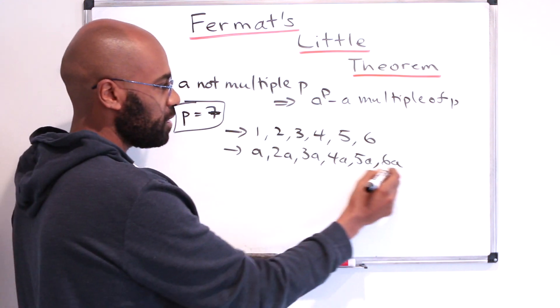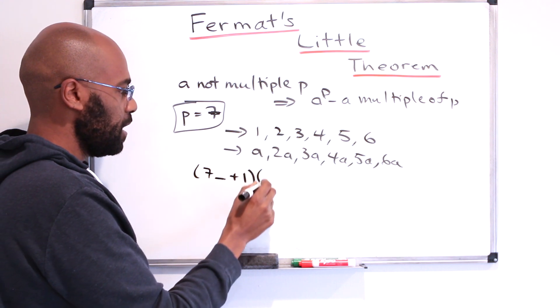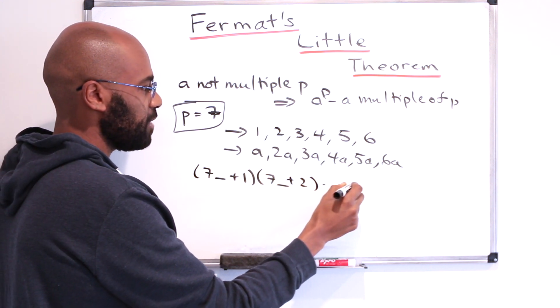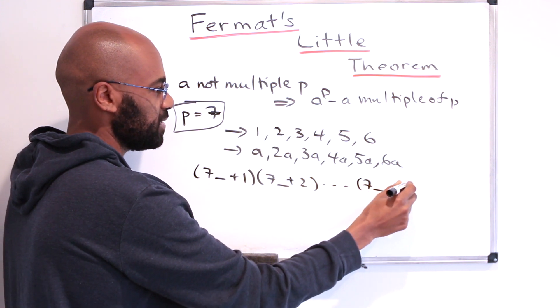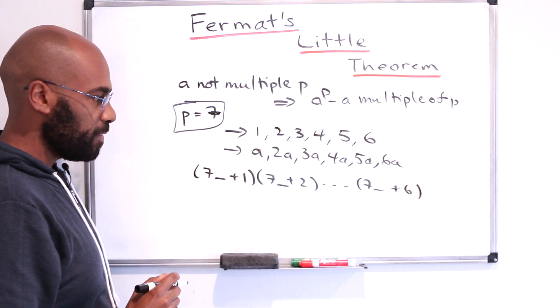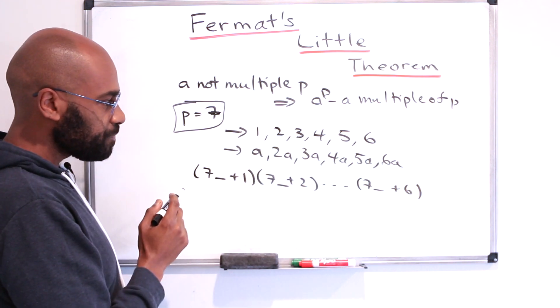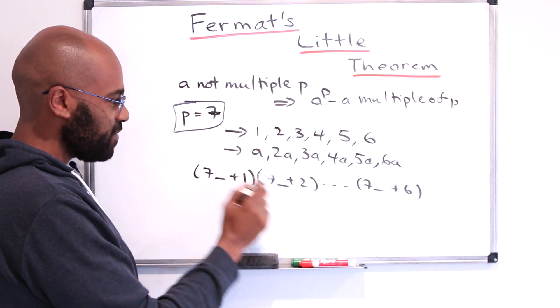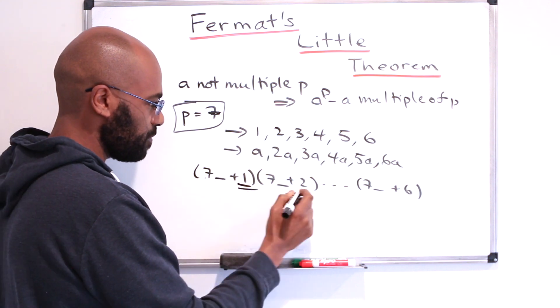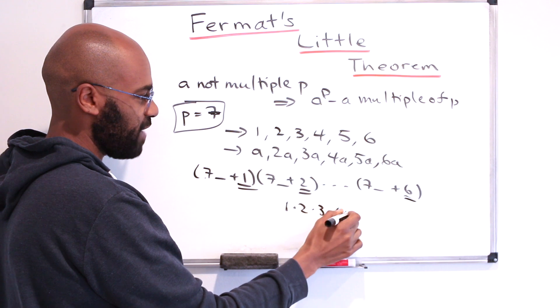But if we take the product of these numbers, one of them looks like 7 times something plus 1, one of them looks like 7 times something plus 2, etc., up to 7 times something plus 6, because we get all possible remainders when dividing by 7. If you expand this out as a binomial, you notice that every single term is going to have a factor of 7 in it, except for this last term, which is the product of 1, 2, 3, 4, 5, and 6.